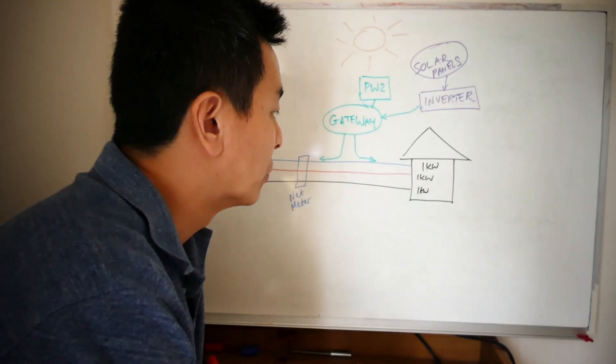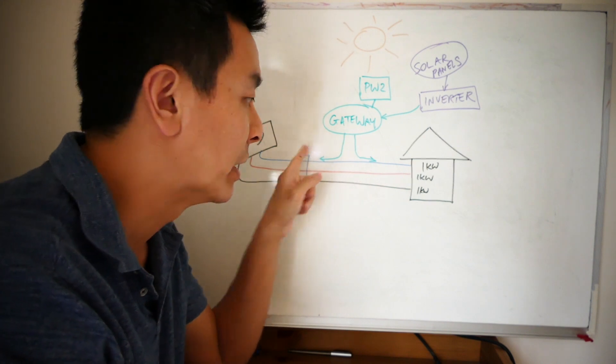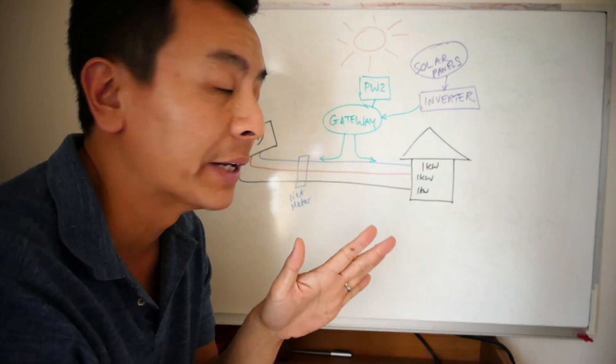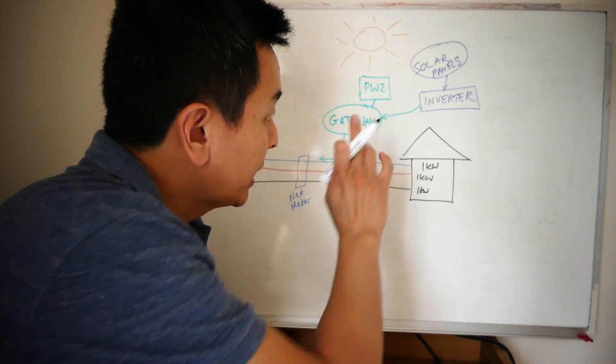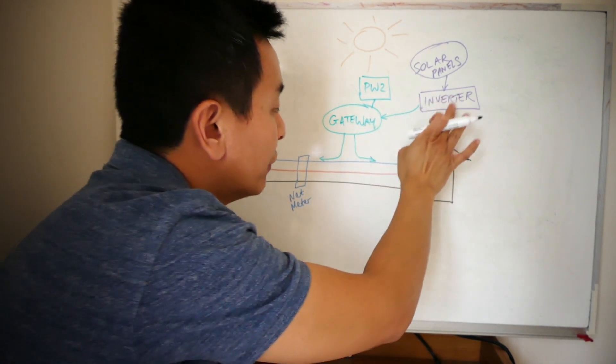So you don't get billed either way, and also don't get gypped because you don't get like a feed-in tariff with the one kilowatt going back this way, but you're paying full price for the load going that way, if that makes sense. So that's how it works with a three-phase home, a single-phase gateway, and a single-phase solar inverter.